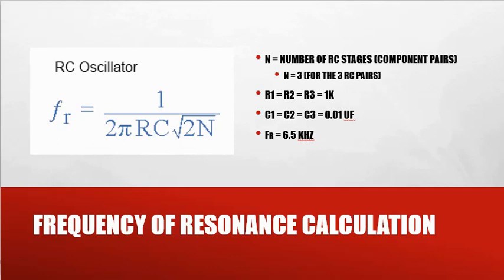In this, one of the things we'll find is R1 is equal to R2 equals R3 equals 1k. C1 is equal to C2 and C3, and it's 0.01 microfarad. If we pop this into our formula, we should get a frequency of resonance of 6.5 kilohertz.